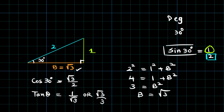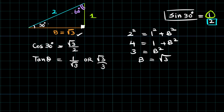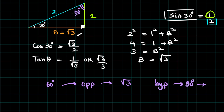Is there anything else I can make use of in this diagram? The answer is yes. There is this angle which is 60 degrees. If this angle is 90 degrees, the other two angles should add up to 90 degrees. If this is 30 degrees, therefore this is 60 degrees. The opposite of the 60 degree angle is root 3, because it is right in front of 60 degrees. The hypotenuse still remains as 2, and the adjacent side for 60 degrees is 1.